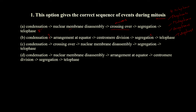Option C includes condensation and crossing over again — this is also wrong. Option D has condensation, nuclear membrane disassembly, arrangement at equator, centromere division, segregation in anaphase, and finally telophase. The correct option is D.